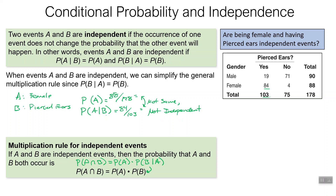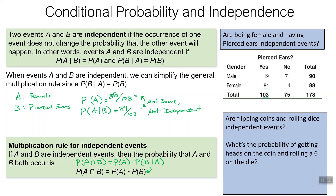Some things that are always independent: flipping coins, rolling dice — these are always independent from each other. For instance, no matter what, when you flip a coin the probability of heads is always one half. Whenever you roll a die, the probability of getting a six is always one out of six. So what's the probability of getting heads on a coin and rolling a six on a die? It would be the probability of heads times the probability of getting a six — since the coin doesn't affect the die, it's just one half times one sixth, which gives us one twelfth, because those are independent events.